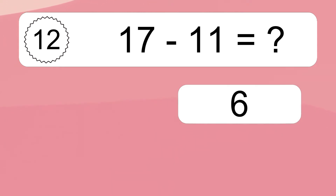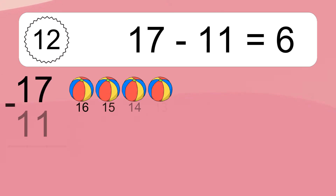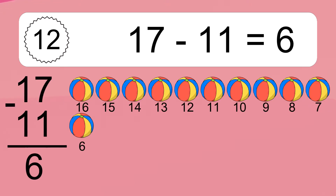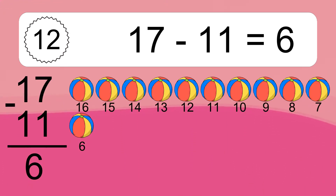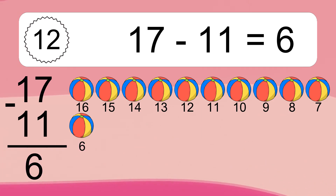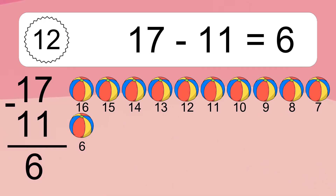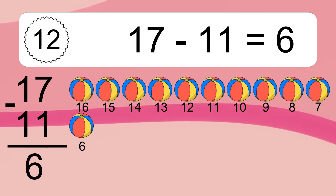17 minus 11 equals what? 17 minus 11 equals 6. Let's count it. 16, 15, 14, 13, 12, 11, 10, 9, 8, 7, 6.